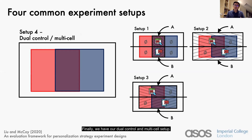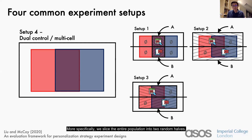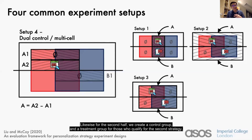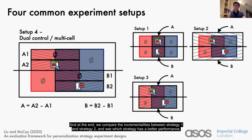Finally, we have the geo-control multi-cell setup. The key idea is that each strategy gets its own control group to calculate its own incrementality. At the end, we compare the strategies by comparing the incrementality of each individual strategy. More specifically, we slice the entire population into two random halves. For the first half, we focus on those who qualify for strategy one, creating a control group and a treatment group to calculate the incrementality of strategy one. Likewise, for the second half, we create a control group and treatment group for those who qualify for strategy two. Then we compare the incrementalities between strategy one and strategy two to see which has better performance.